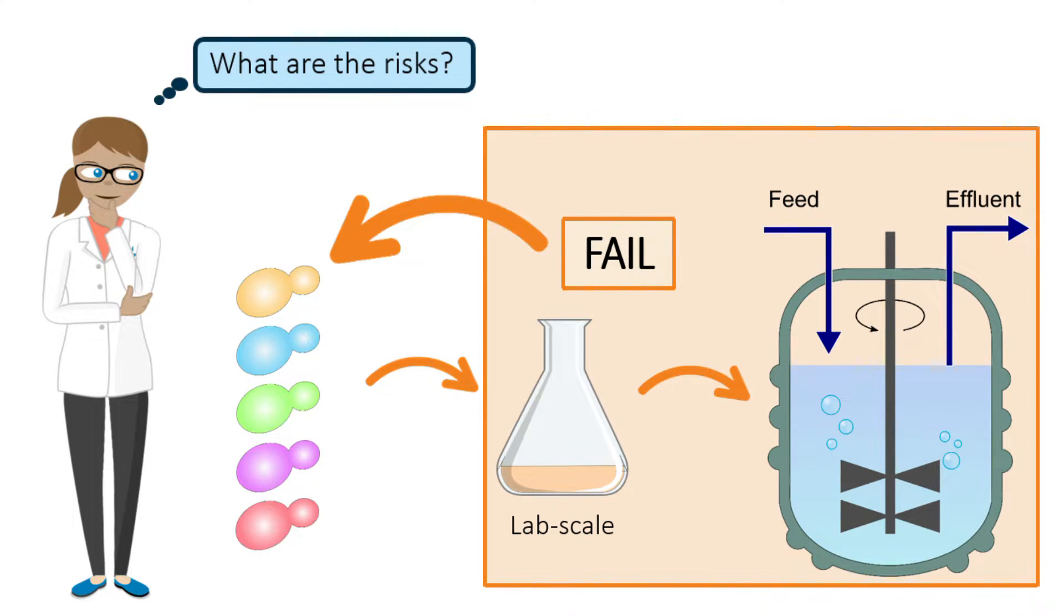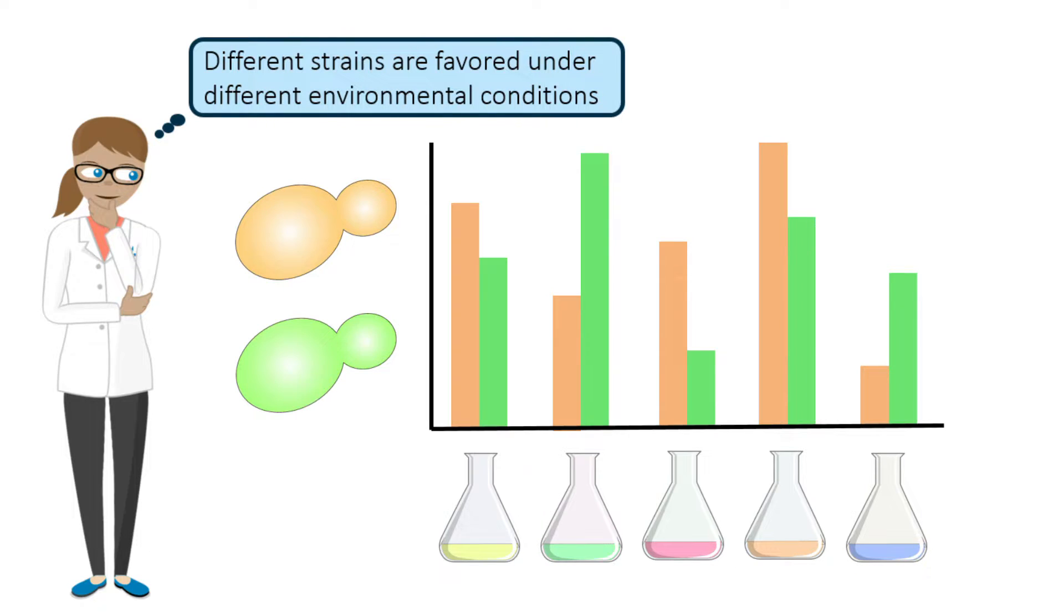Furthermore, there is growing evidence that different strains are favored under different environmental conditions. Changes in media nutrients, buffer pH, cultivation temperature, and aeration can all influence cell physiology and metabolism.